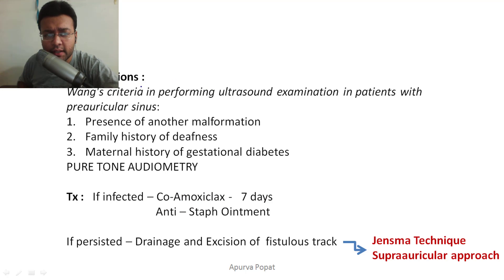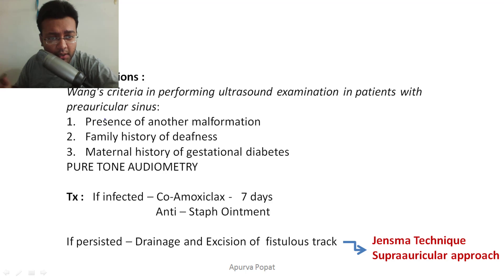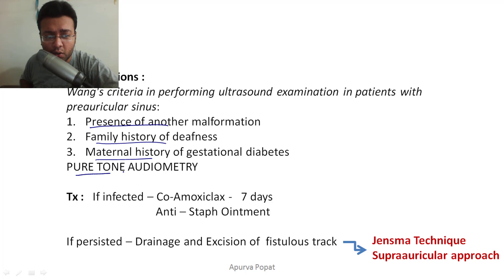Clinical features are typically asymptomatic unless the tract is infected or there is foul discharge. Regarding investigations, since there are high chances of renal abnormalities, it is not feasible to do ultrasound on every child. However, if there is presence of another malformation, family history of deafness, or maternal history of gestational diabetes, send the child for abdominal ultrasound to rule out abnormalities. Pure tone audiometry should also be done to rule out hearing defects.